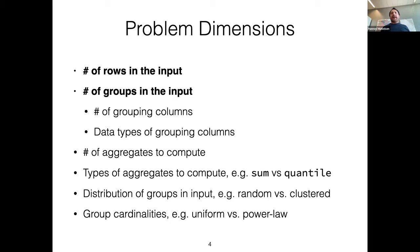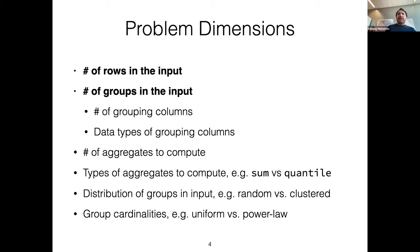There's a slight side note: the data types of the grouping columns matter — it's probably harder to aggregate on strings than on integers, but that's a bit of a linear overhead. The number of groups is what actually hurts. We also have factors like the number of aggregates — sum, min, max, and so on — and what kind of aggregates you want to compute: streaming aggregates like sum, or more involved ones like quantile where there's no straightforward streaming computation. The distribution of groups in the input is also relevant.